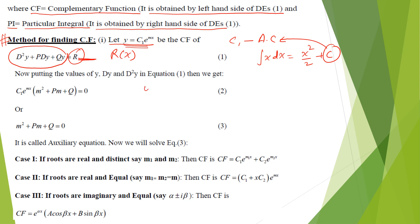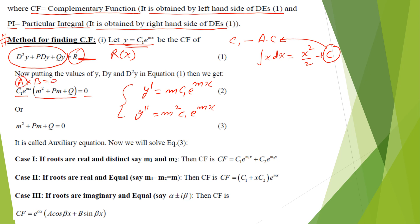Differentiating, y' = m·c₁·e^(mx) and y'' = m²·c₁·e^(mx). Substituting into the equation and factoring out c₁·e^(mx), we get m² + pm + q = 0. Since c₁·e^(mx) cannot be zero, we set m² + pm + q = 0, which is called the auxiliary equation. This quadratic always has roots that determine the CF.